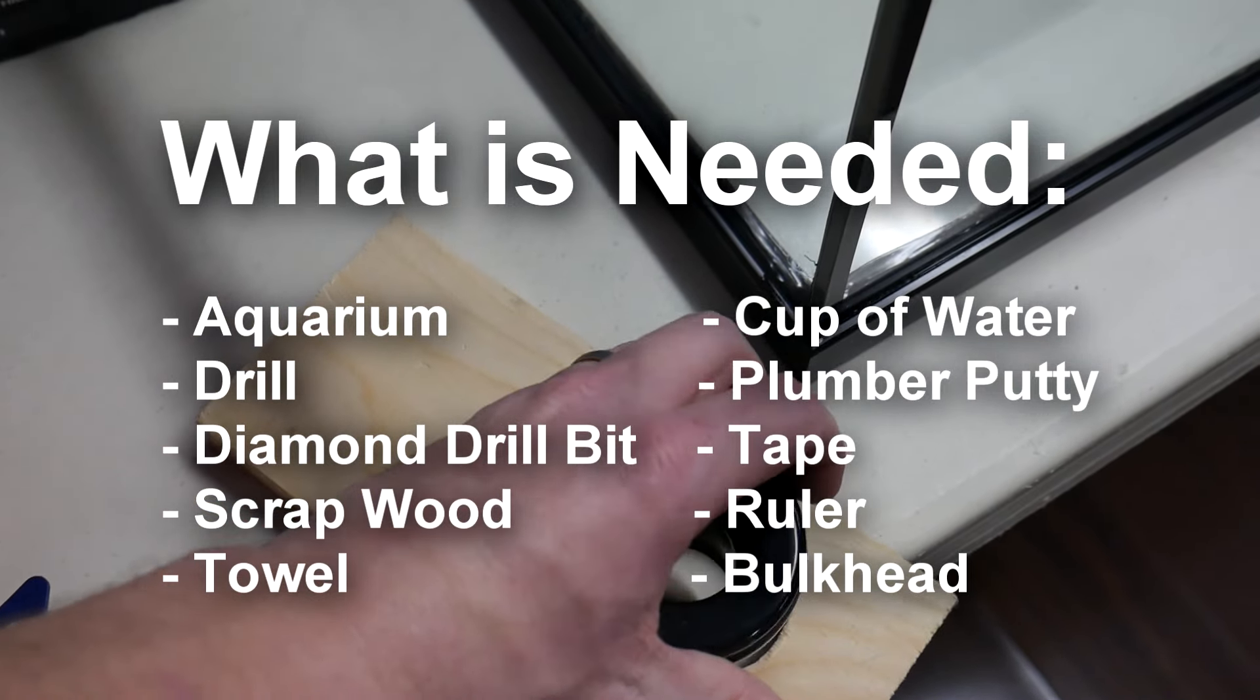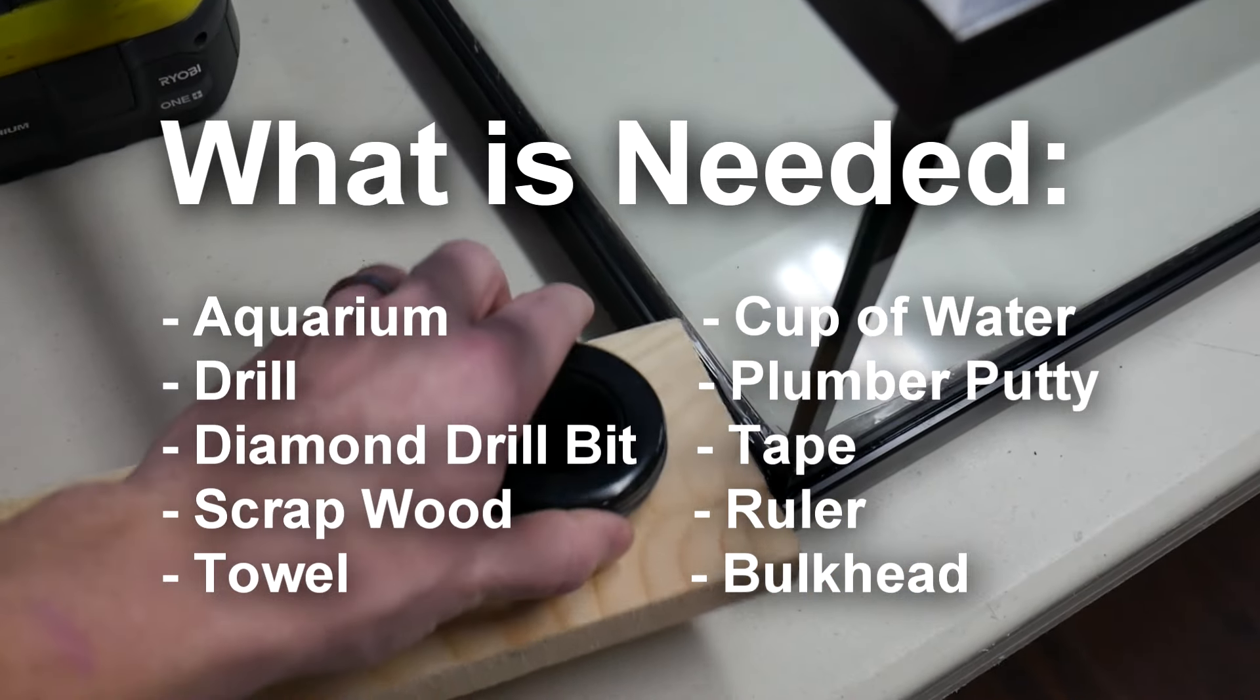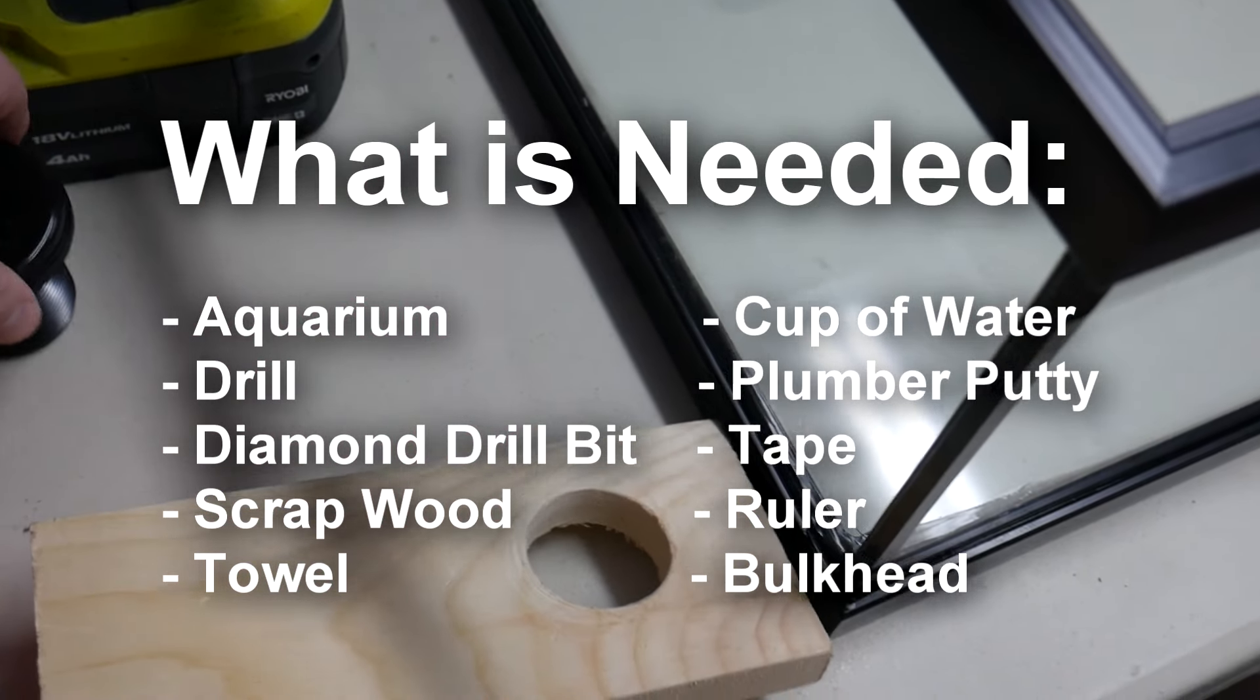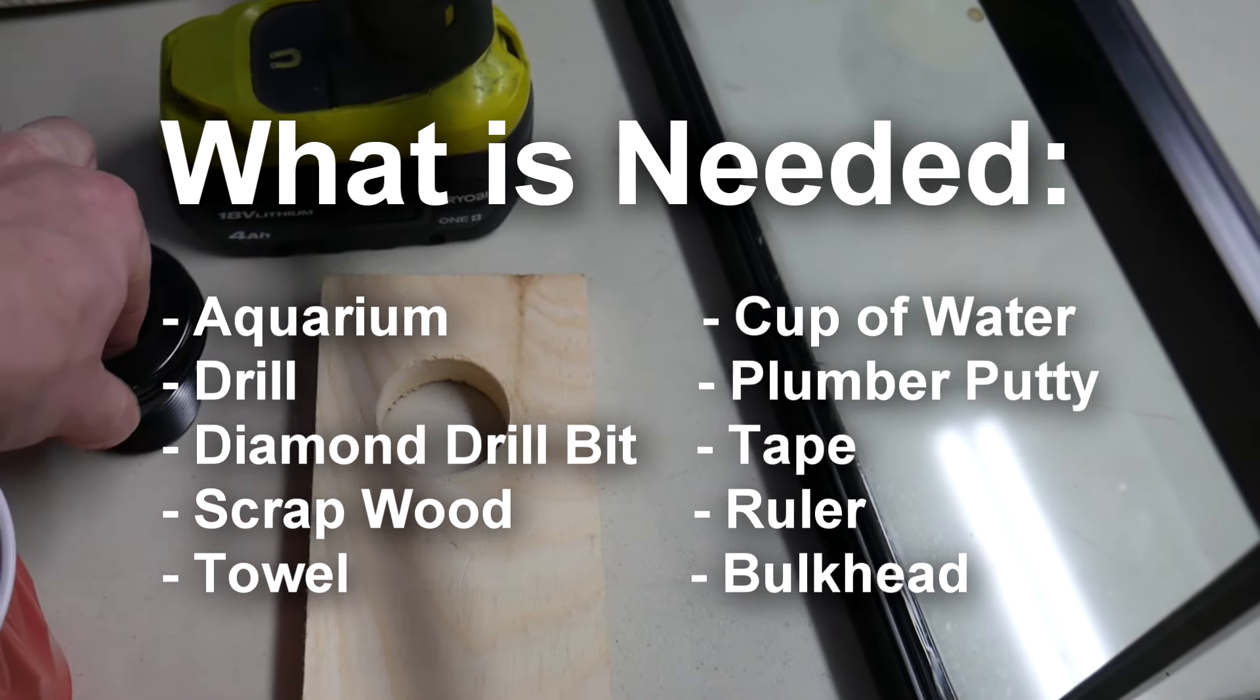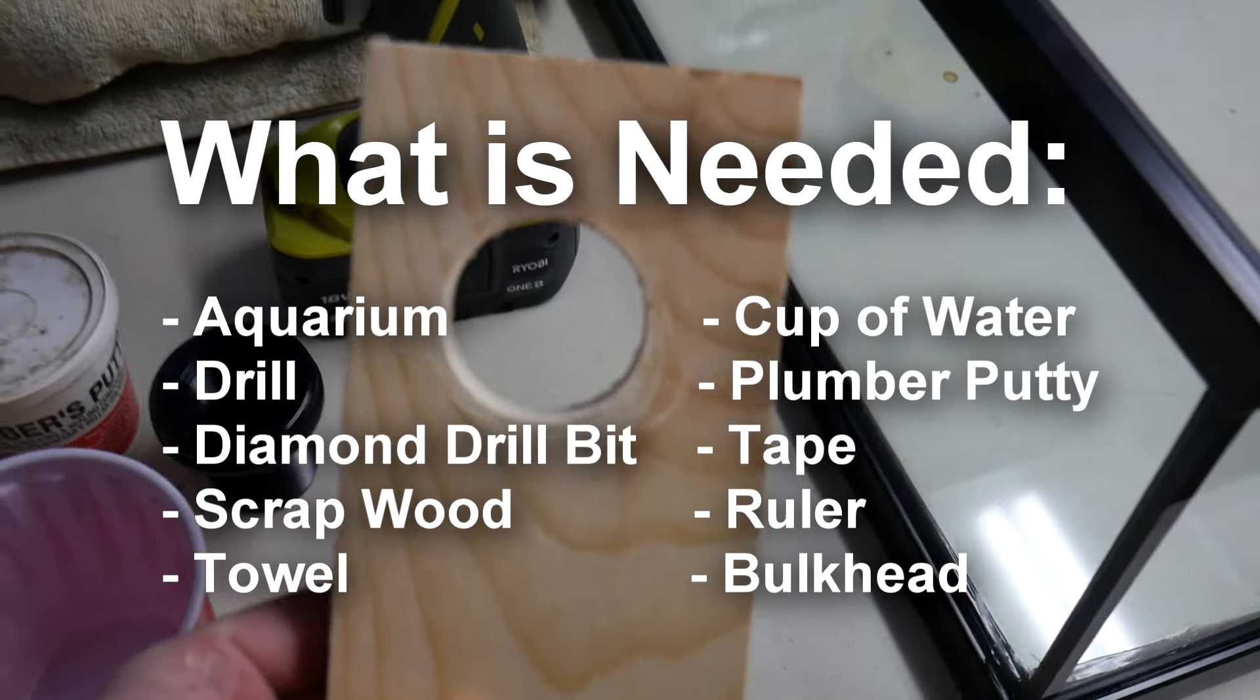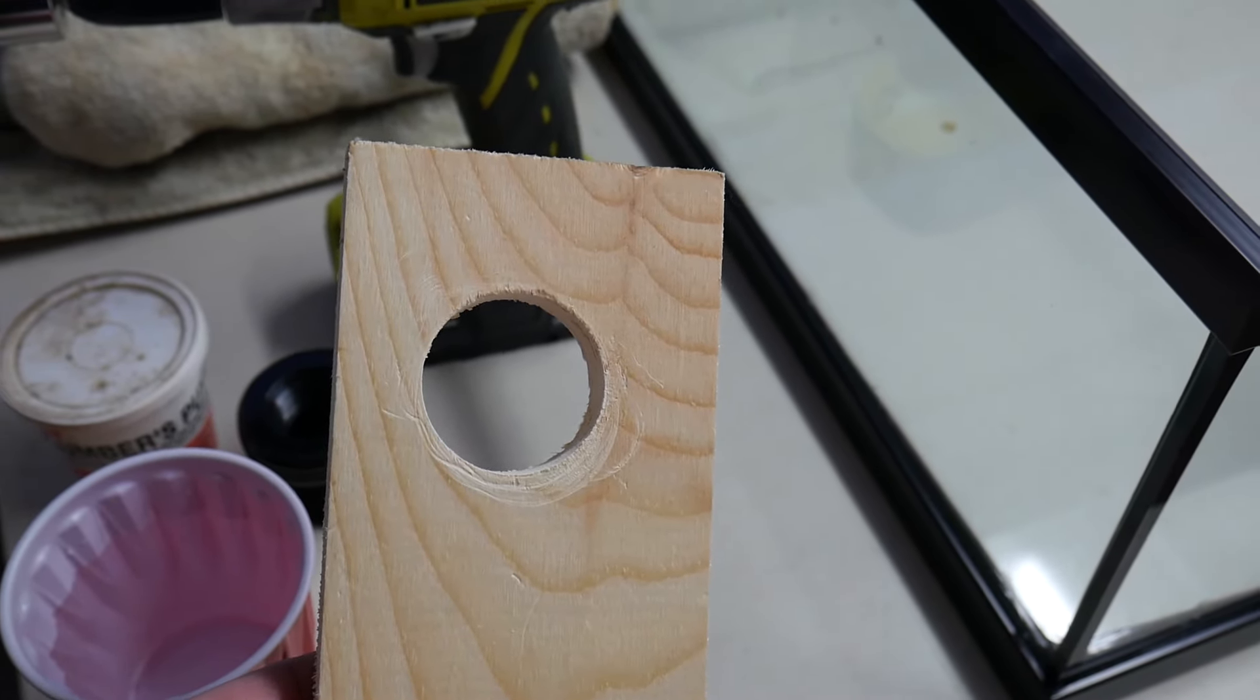There's charts out there that can tell you what drill bit size you need for the bulkhead that you have selected. Make sure you get the right size bulkhead that you need and then the right corresponding diamond drill bit. I typically just buy the diamond drill bit sets that have multiple sizes so you can figure out which one you need and you're going to be able to test it beforehand.